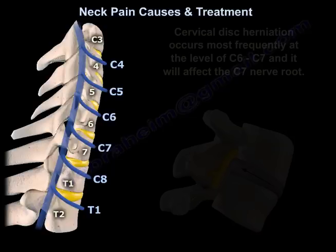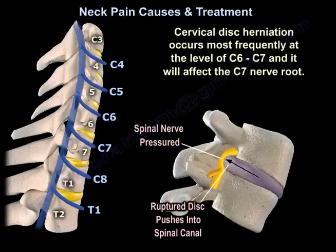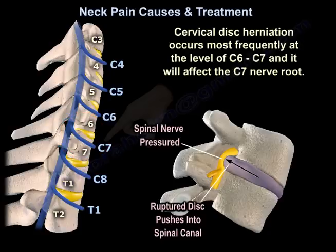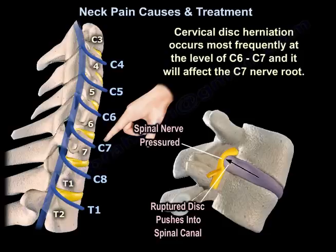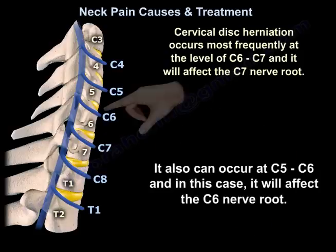Cervical disc herniation occurs most frequently at the level of C6-C7, and it will affect the C7 nerve root. It can also occur at C5-C6, and in this case it will affect the C6 nerve root.